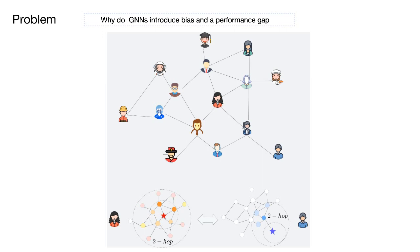Let's begin with a simple example that illustrates that compared to the central nodes, marginal individuals face a greater challenge in acquiring task-related information in MPNNs.